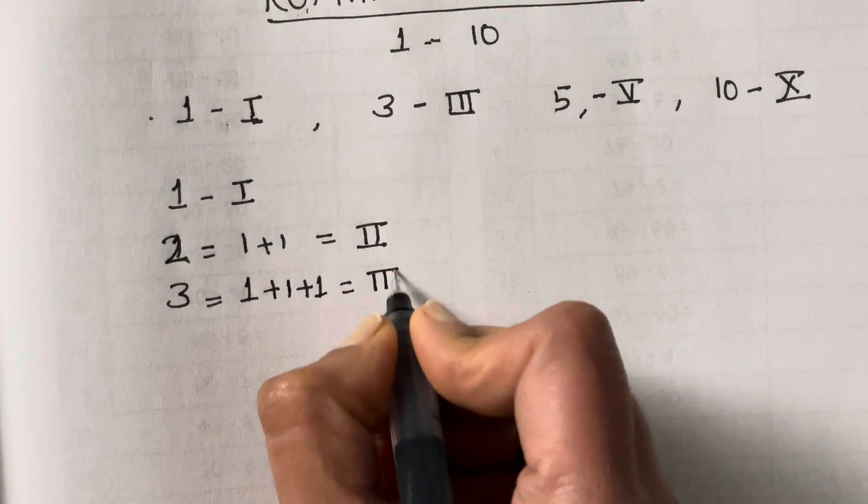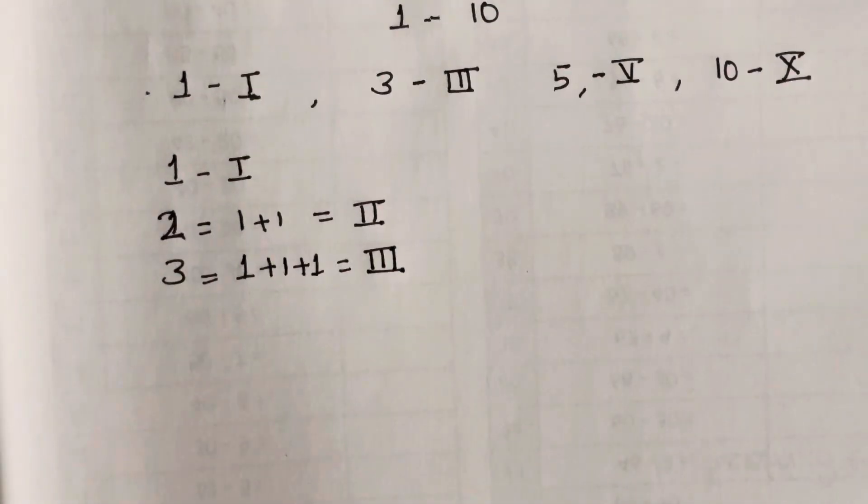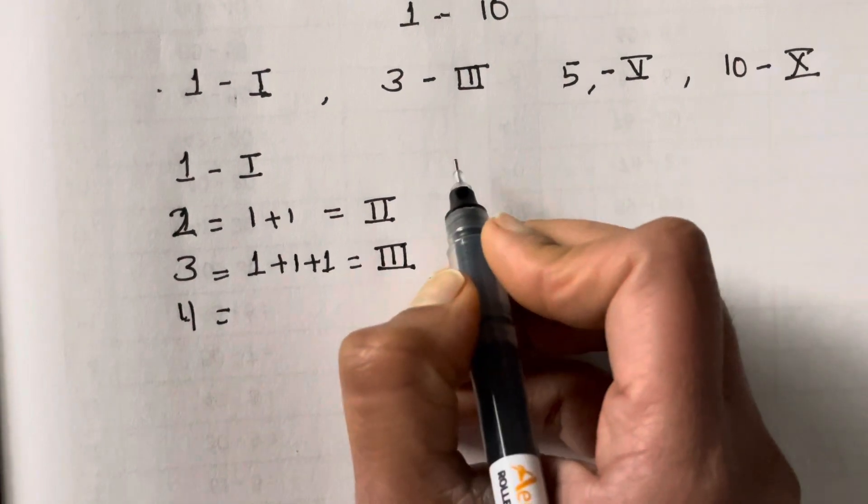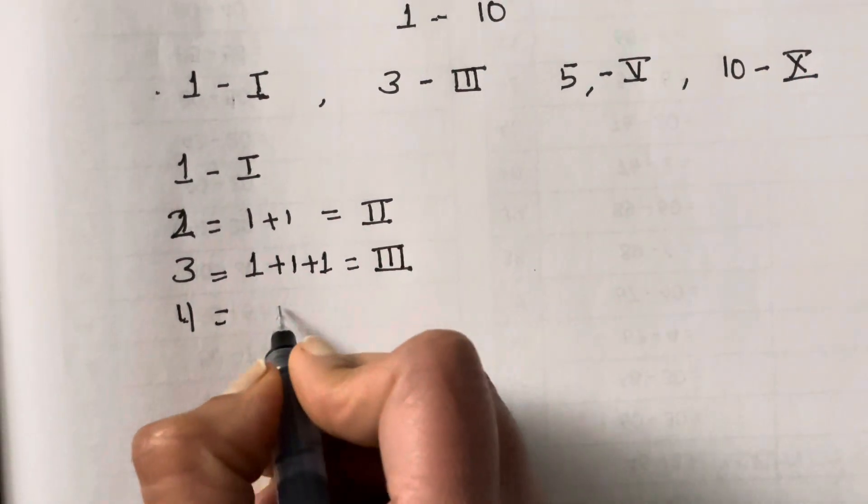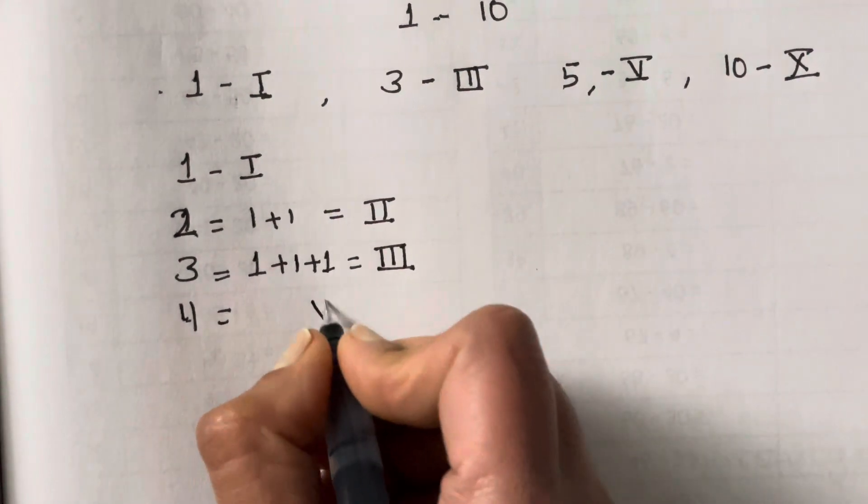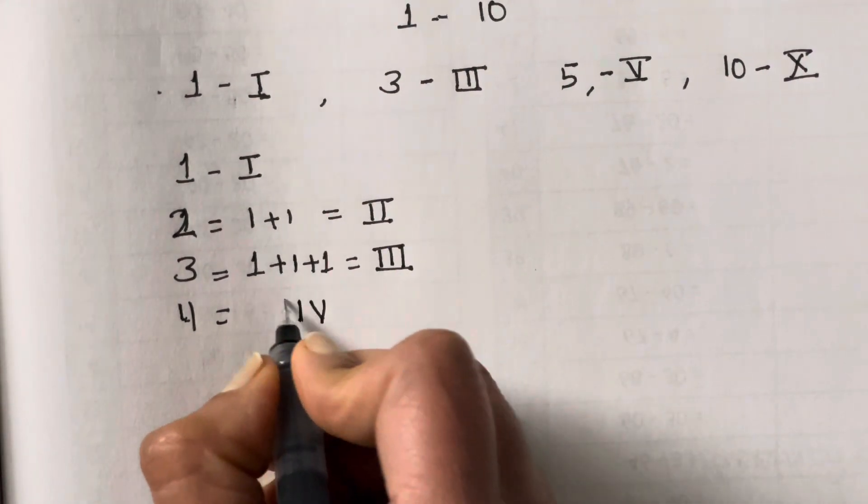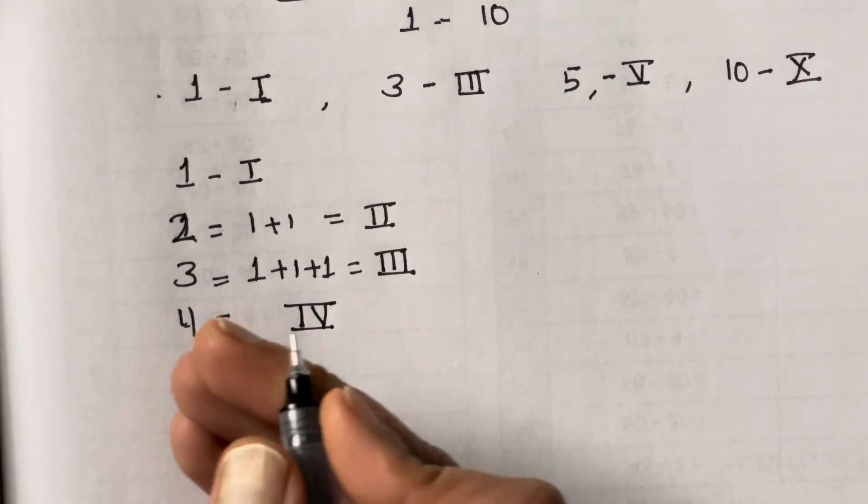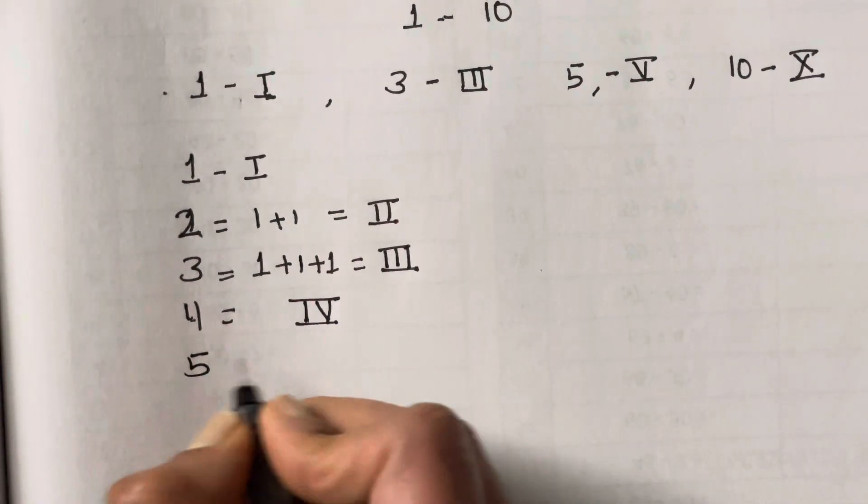Now 4. You can write 4 as 5 minus 1. So 5 which is V, and minus 1. When it's minus, the 1 comes before the number, so that's IV. And then 5 is V.